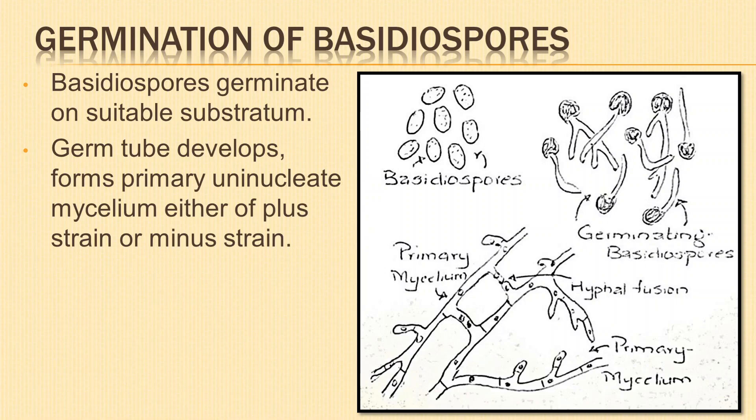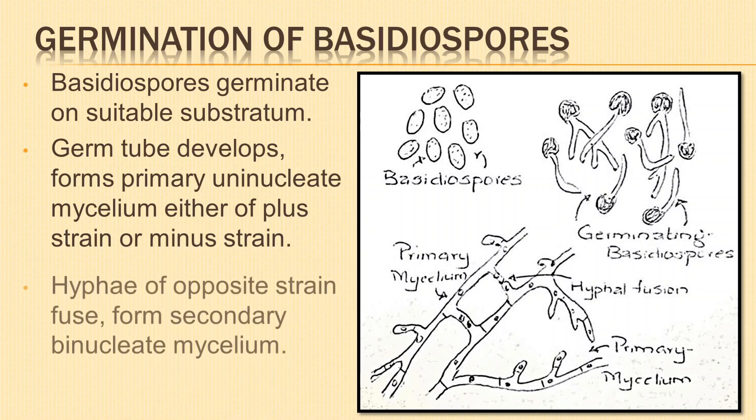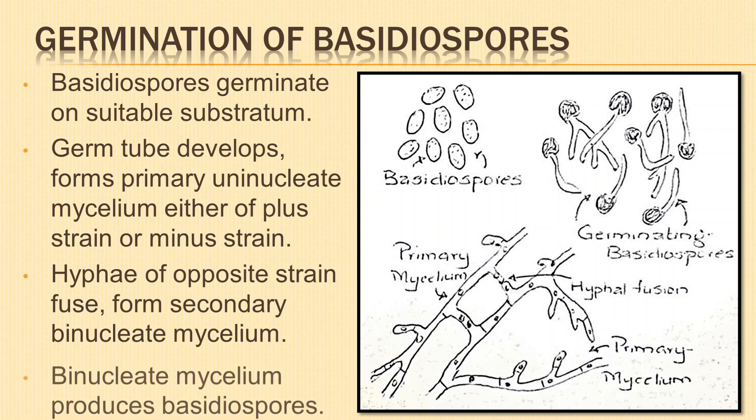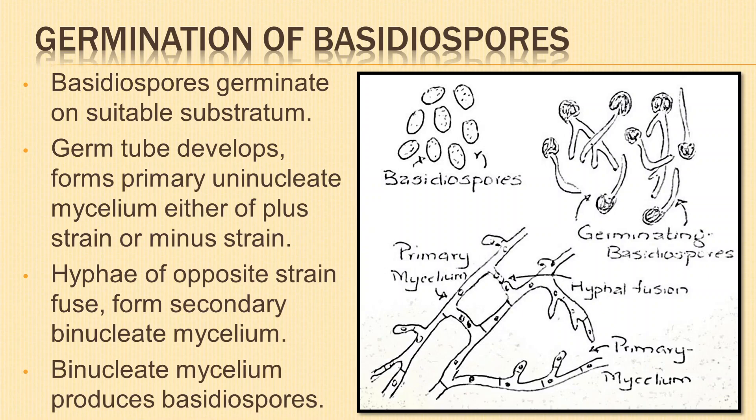The primary mycelium consists of uninucleate hyphae. Hyphae of two primary mycelia of opposite strains fuse to form secondary or dikaryotic mycelium. The binucleate mycelium then produces the basidiocarps.